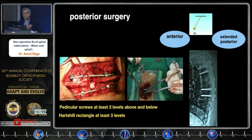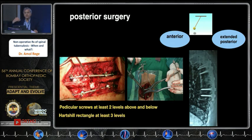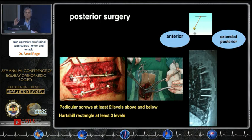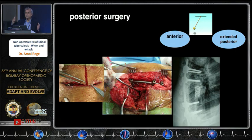The pendulum has swung from anterior to extended posterior surgery. In posterior surgery, you can decompress circumferentially very well — excise ribs and facets, go laterally, and address the anterior column from behind. If using pedicular screws, go at least two levels above and below; if using a hard shield rectangle, go three levels above and below. It is important to ensure the anterior column is also reconstructed, either by shortening the spine to get bone-to-bone contact or by taking a T-incision, going laterally to the anterior aspect, and using a cage or bone graft. Both columns must be reconstructed with posterior surgery.